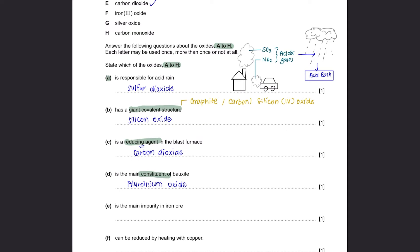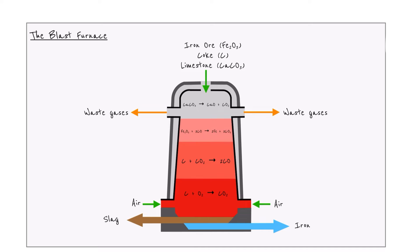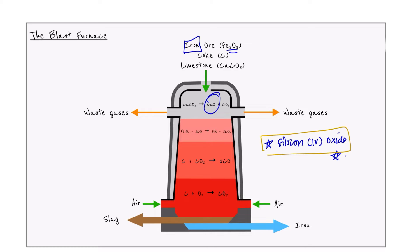Question E: Which oxide is the main impurity in iron ore? This question is back to the extraction of iron from hematite. The main impurity you should know is silicon oxide. Calcium oxide reacts with silicon oxide, the main impurity, to form calcium silicate, also referred to as slag. The slag is removed at the bottom of the blast furnace.